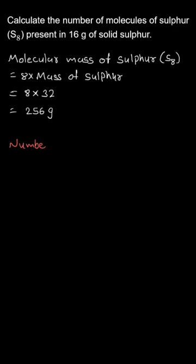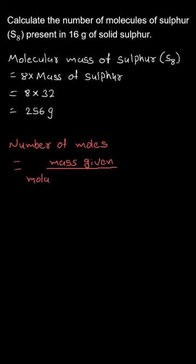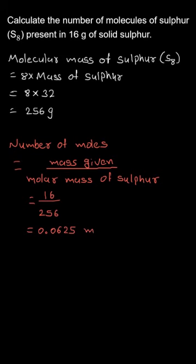Now, to calculate the number of moles, we need to divide the given mass by the molar mass of the sulfur. The given mass from the question is 16 grams, and the molar mass of the sulfur molecule, as we calculated earlier, is 256 grams. So the number of moles will be 16 upon 256, that is 0.0625 moles.